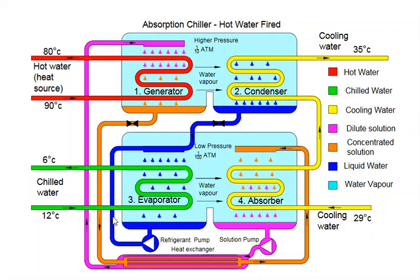The cooling effect is obtained from the evaporator coil, which serves the production floor or any area requiring cooling. The four steps are: generator, condenser, evaporator, and absorber. Please subscribe to our channel, American Academy. Thank you for viewing.